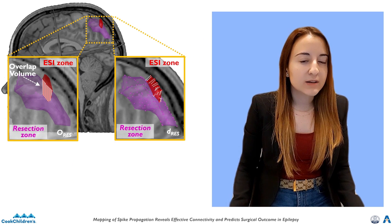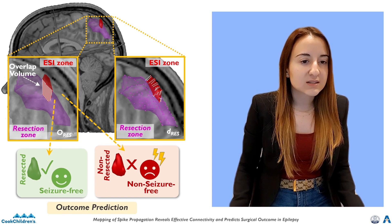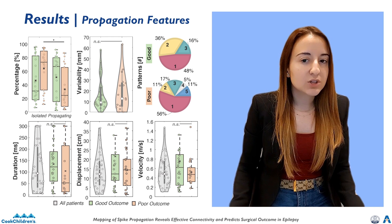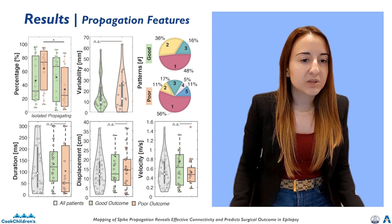We assessed the overlap and the distance between each zone and the resected area during surgery, then used the Fisher Exact Test to compare the prognostic value of resecting these zones. We observed one predominant spike propagation pattern in source space for each patient. Spikes propagated with a median duration of 95 milliseconds, a displacement of 14 centimeters, and a velocity of 0.5 meters per second.